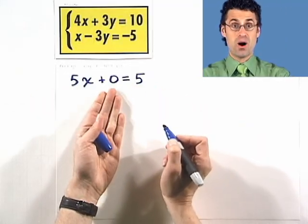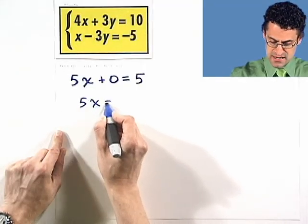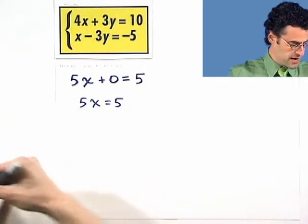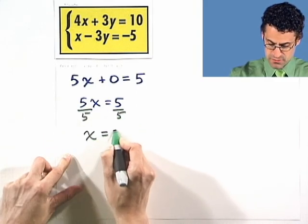I've eliminated the y. That's why it's called elimination. I used both equations together. And so, now I see that 5x equals 5. And so, if I divide both sides by the 5, I see x equals 1.